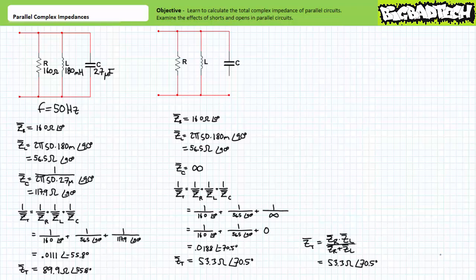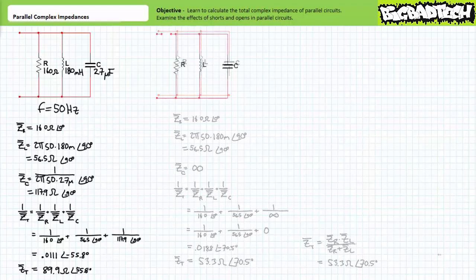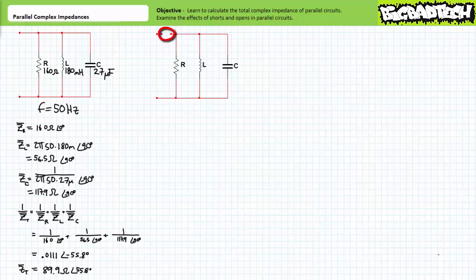Opens can also occur in other places with far more dramatic consequences. Consider an open at the top node. While the three elements may still be in parallel, there is no path and as a result no current can flow. An open in this location is like adding an infinite resistance in series with our intended parallel arrangement. Infinite impedance effectively renders this path useless as a means of carrying current, and as a result, the impedance of this open parallel arrangement is infinite.